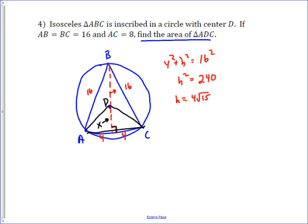It would just be 1 half times 8 times x. Well, can we find x? Yes. x turns out to be the radius of the circle, BD, and you take that away from h, which was 4 root 15.